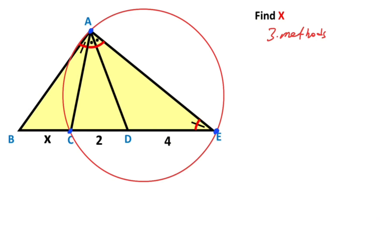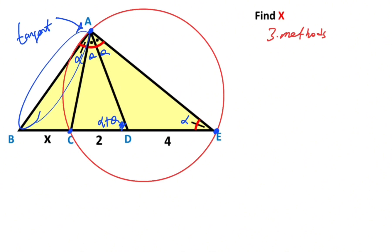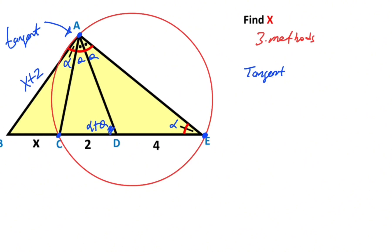After that, if you focus on point A, point A must be the tangent point, and alpha must be the tangent-chord angle. After that, let's call these angles theta — here must be equal to alpha plus theta. So this triangle is an isosceles triangle. Therefore, this length must be equal to X plus two. Therefore, we can apply the tangent-secant theorem.